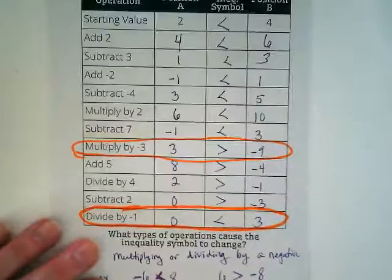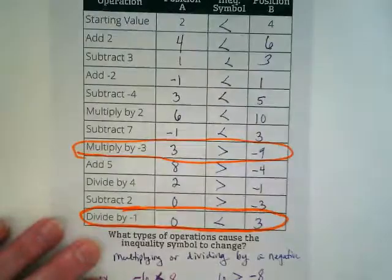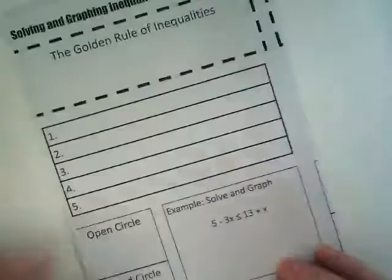We know that if we multiply or divide by a negative, we saw our symbol flip. True? So that is the golden rule of inequalities.